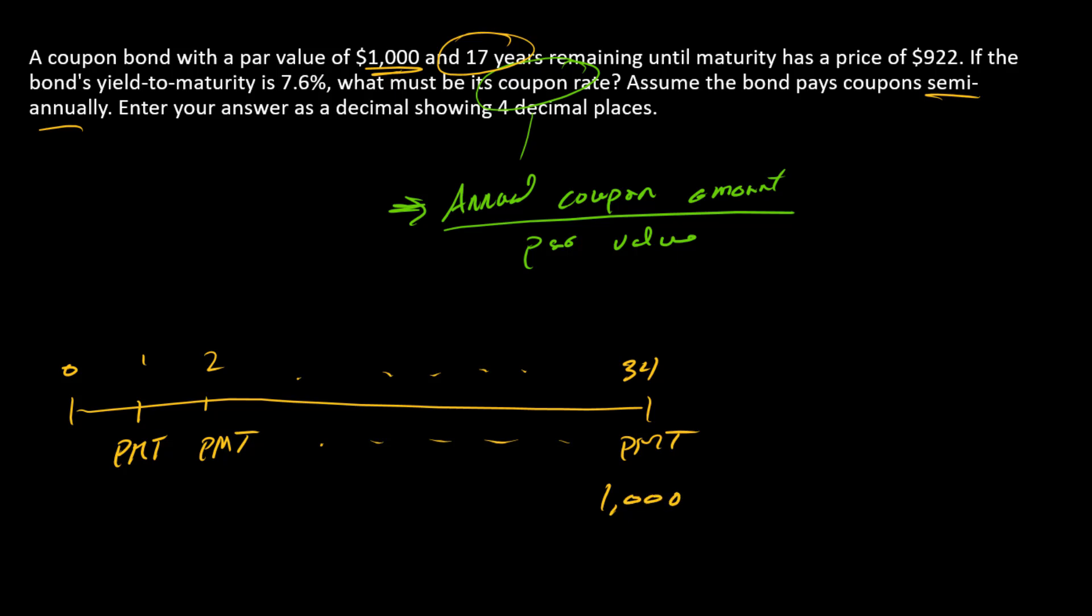We know that the yield to maturity is 7.6%, so the semi-annual r is half of that or 3.8%. And then we have a price or a present value in this case of $922. So we can solve for the payment.